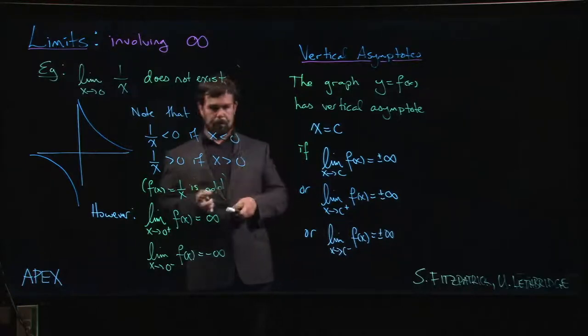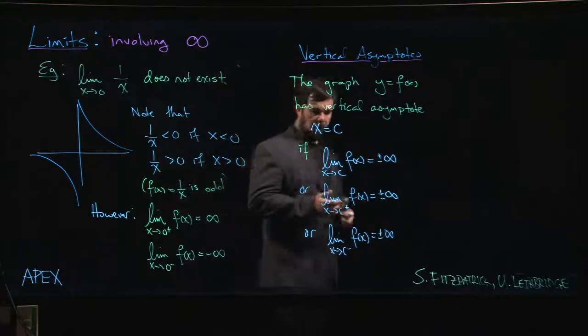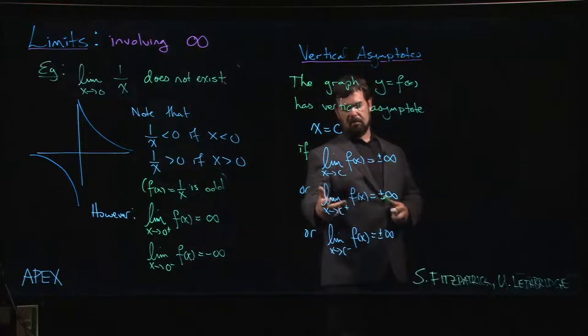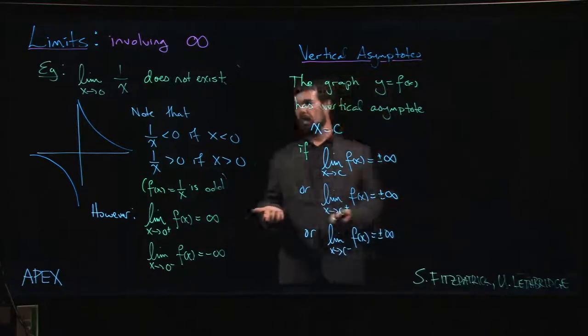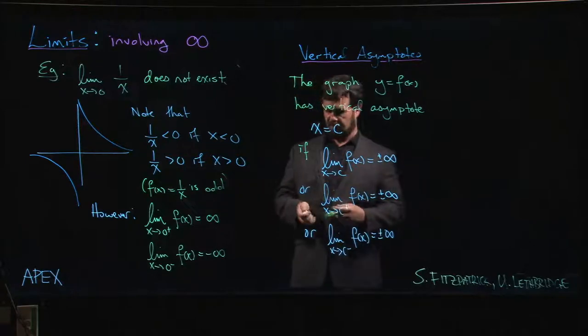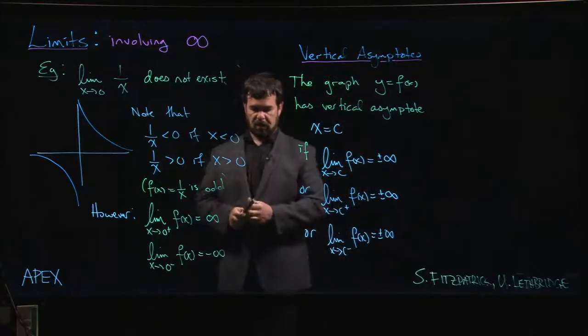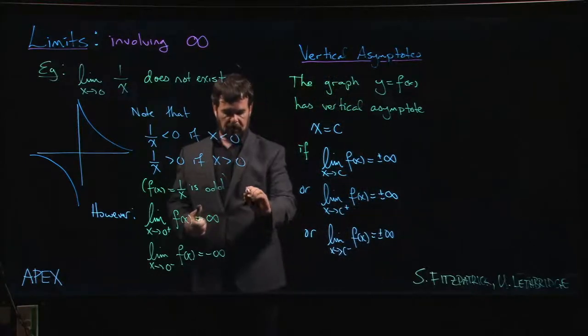It might be the case that the right-hand limit is infinite and the left-hand limit is not, or the left-hand limit might not even be defined. That's fine - you would still say that there's a vertical asymptote.